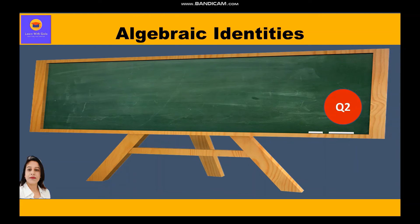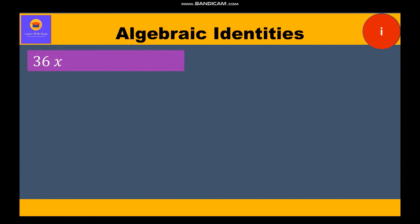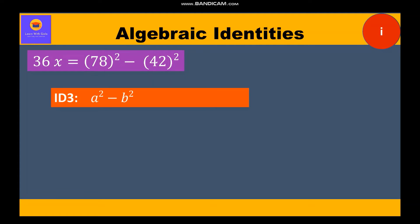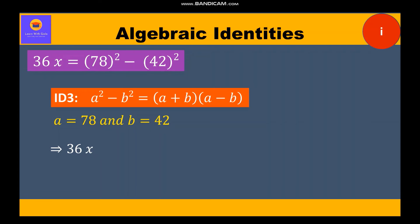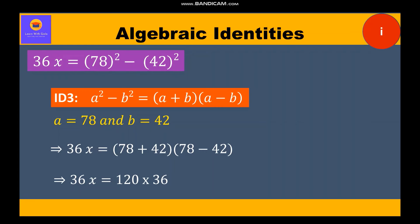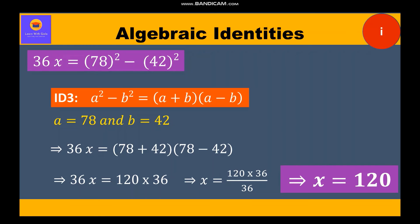Now let's take up the second question: evaluate x if 36x = 78² - 42². The right-hand side is identity 3: a² - b² = (a + b)(a - b), where a = 78 and b = 42. So 36x = (78 + 42)(78 - 42) = 120 × 36. Therefore x = (120 × 36) / 36, and after cancellation x = 120.